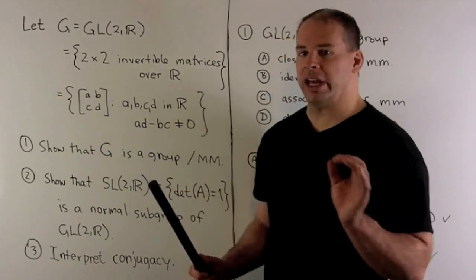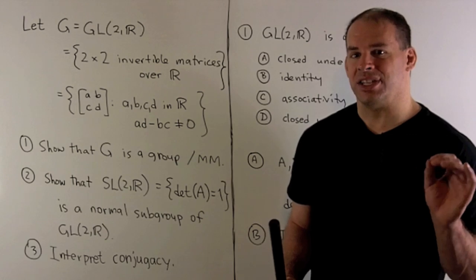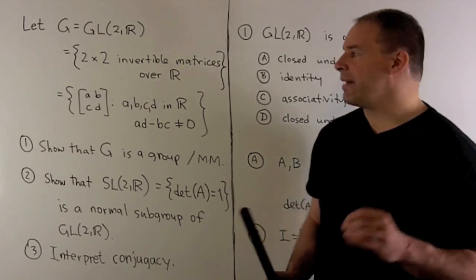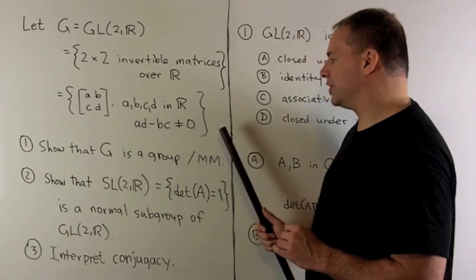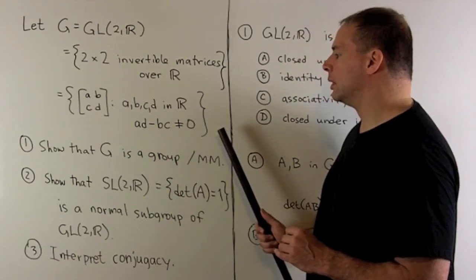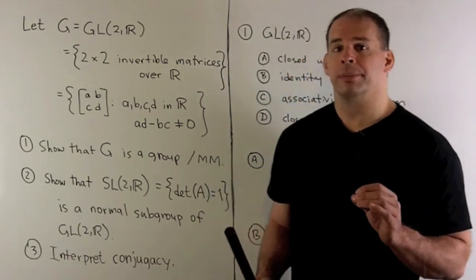So the elements are going to be two by two matrices: a, b, c, and d are real. To be invertible is the same as saying that the determinant is non-zero, so we have a times d minus b times c is non-zero.